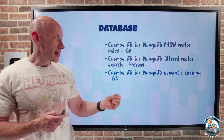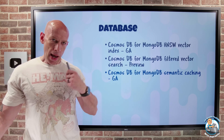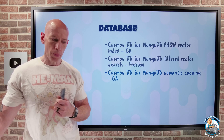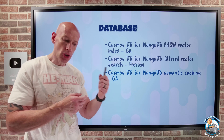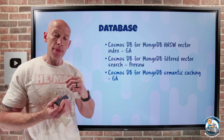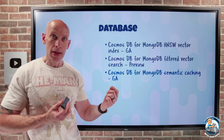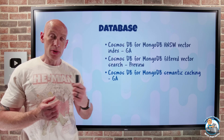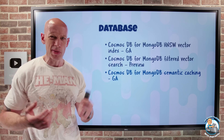Cosmos DB for MongoDB semantic caching has gone GA. If I think about performing searches for my large language model and retrieval augmented generation, it will now cache the response to that query. So if I do the vector search again, it's going to return the results very quickly and save that compute resource as opposed to having to do those complete nearest-neighbor searches again. That will also obviously save me money when I think about using large language models like GPT-4.